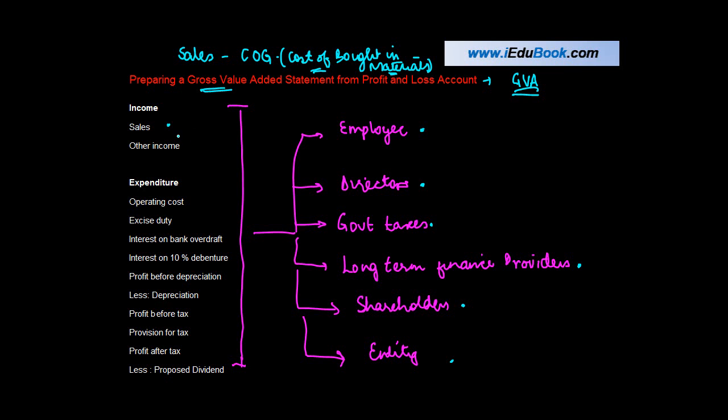So what we are trying to achieve here is, let's say we have other income. Now, other income is obviously not an item relating to the trading operations. So whenever we try to compute the value of the gross value added statement, we do not consider other income.